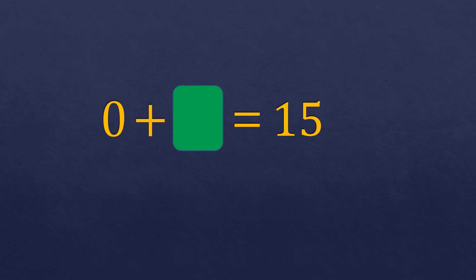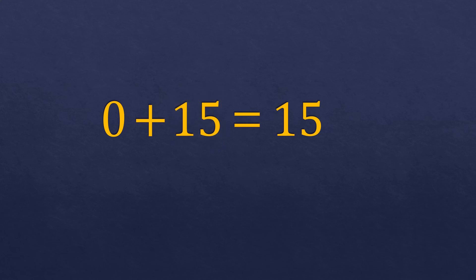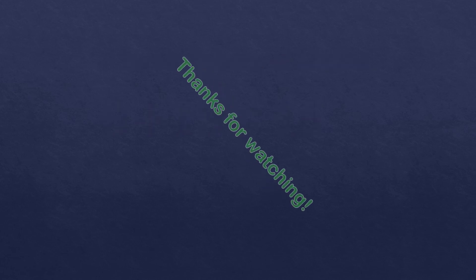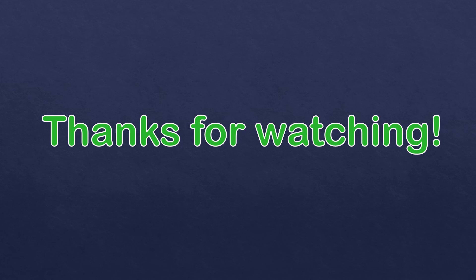We have 0 plus a number equals 15. What must be added to 0 to make it 15? It must be 15 itself. The property is the identity property of addition. Thanks for watching — I hope you learned from this video. Please support my channel by pressing the subscribe button and write the topics you want to learn in the comment section.